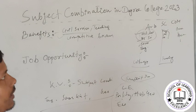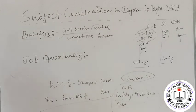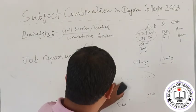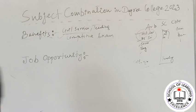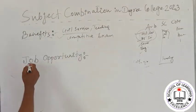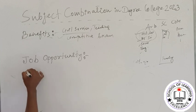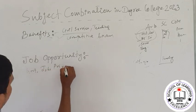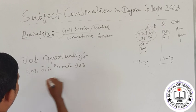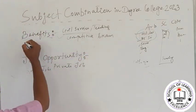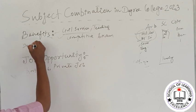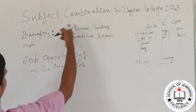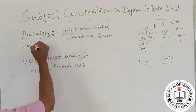Some subjects are less important than others, but subject accommodation is very important at the degree college level, so you have job opportunities. Your private job opportunity depends on your subject combination. One combination in business studies gives you a job opportunity in college and provides further job opportunities.